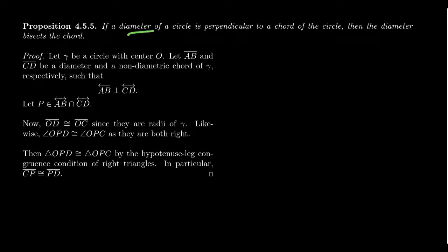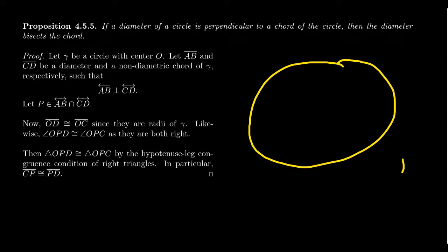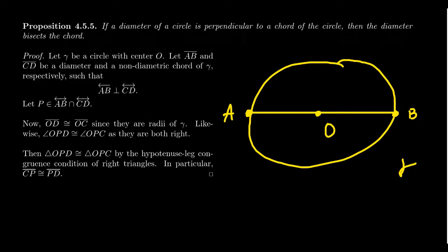Another proposition: if a diameter of a circle is perpendicular to a chord of the circle, then the diameter bisects the chord. The picture has circle gamma with center O, diameter AB, and some non-diametric chord CD such that AB is perpendicular to CD, giving a right angle at their intersection.